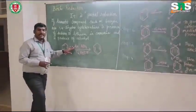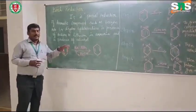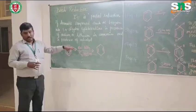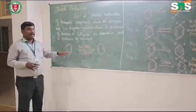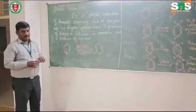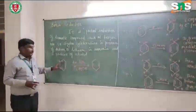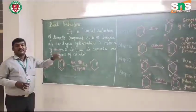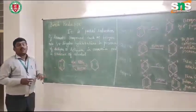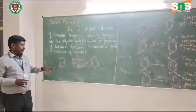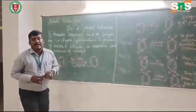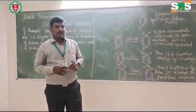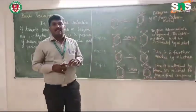This reaction will be carried out in the presence of sodium or lithium, dissolved in ammonia, and in the presence of an alcohol. So, the aromatic compound will be converted via Birch reduction into 1,4-dihydrocyclohexadiene.